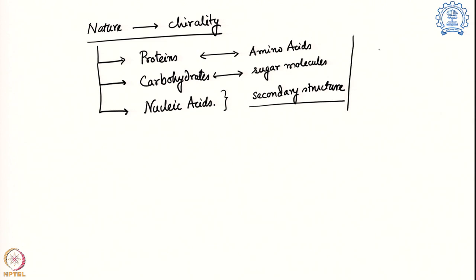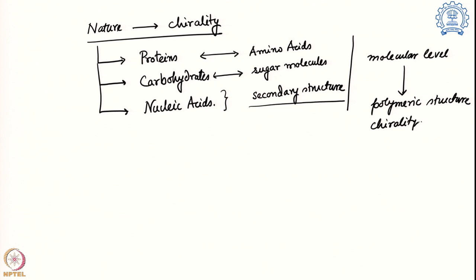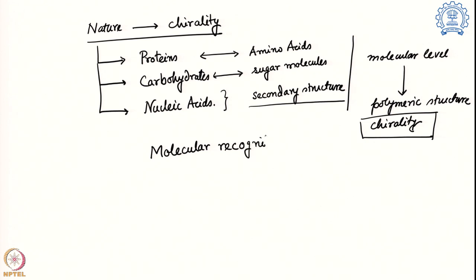Altogether, we find that in these biomolecules, from the molecular level to the large-scale polymeric structure, chirality is playing a huge role. Why is this particular chirality maintained so natively in biomolecules? One important answer we get is molecular recognition. Looking at different molecules and how they interact with other molecules around them, we find that molecular recognition is one of the important factors which actually defines how life goes on.